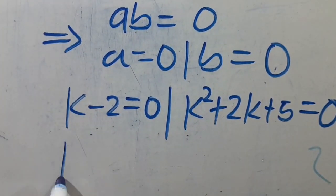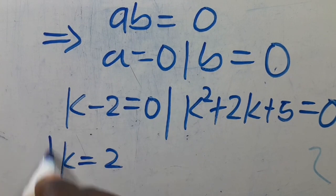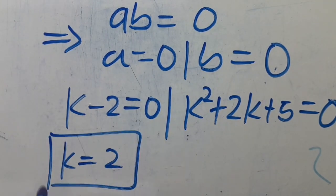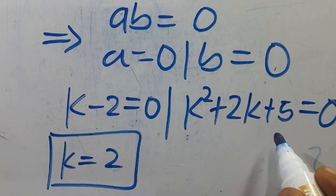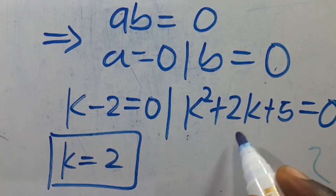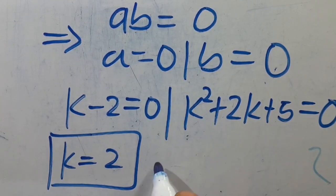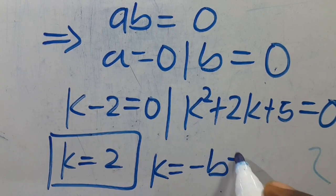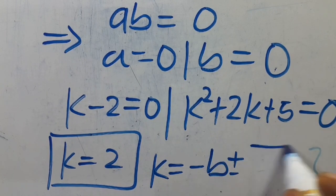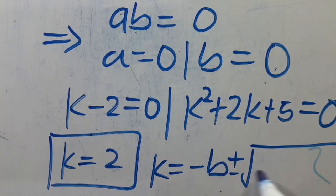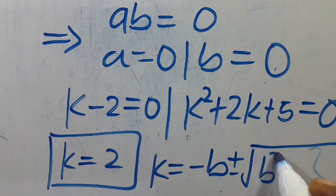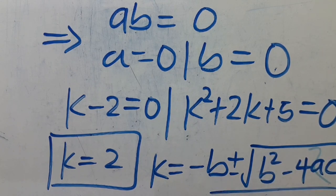From here, we have k equals 2 as the first real solution. Then we can apply the quadratic formula to find the value of k for the second equation, using k equals minus b, positive or negative, square root of b squared minus 4ac, divided by 2a.